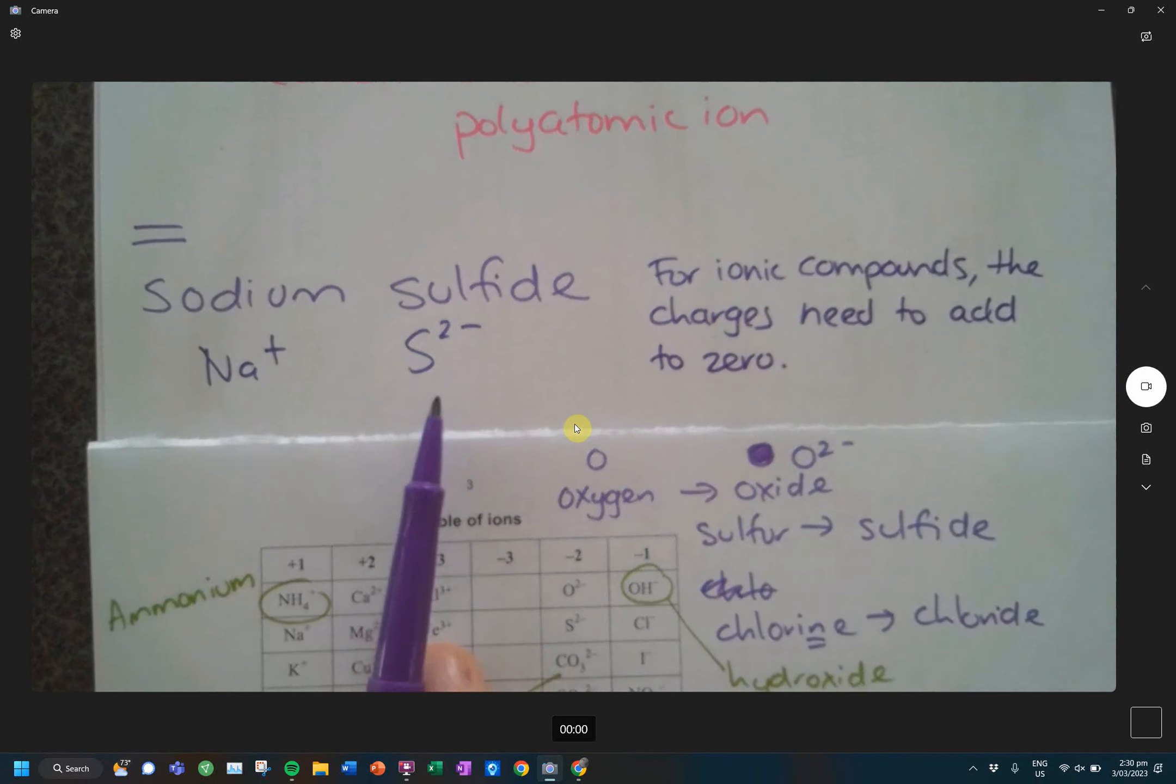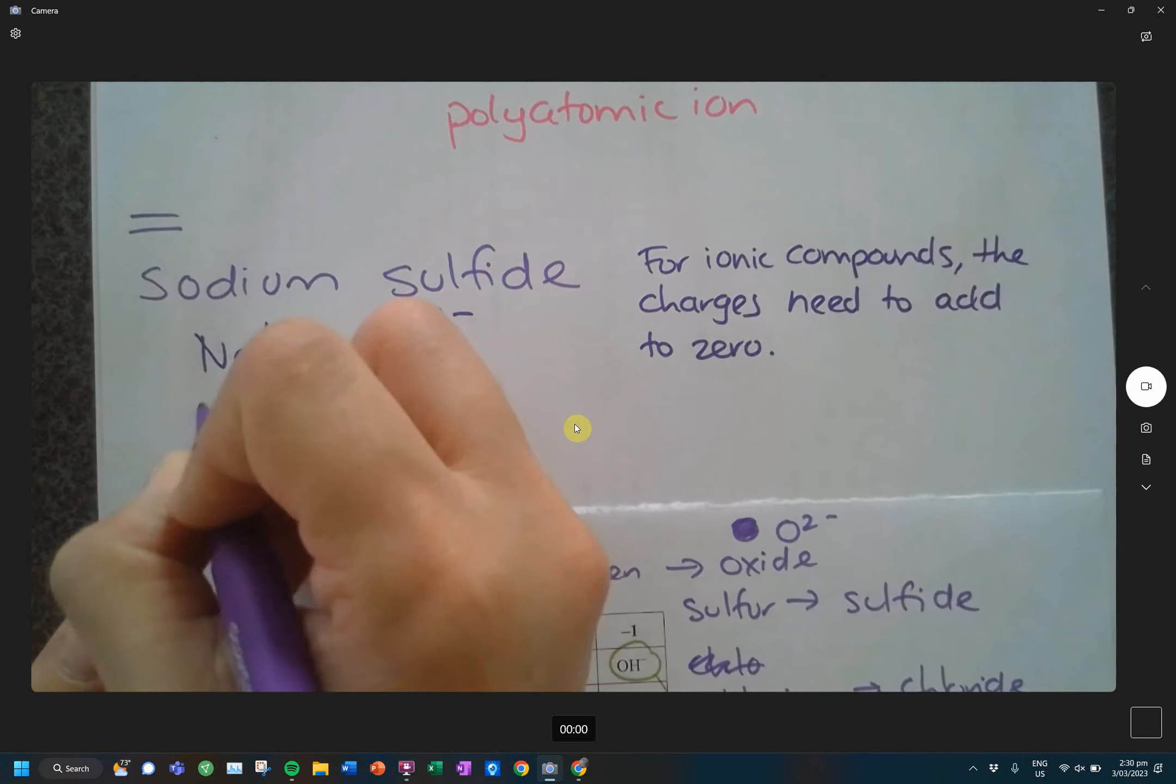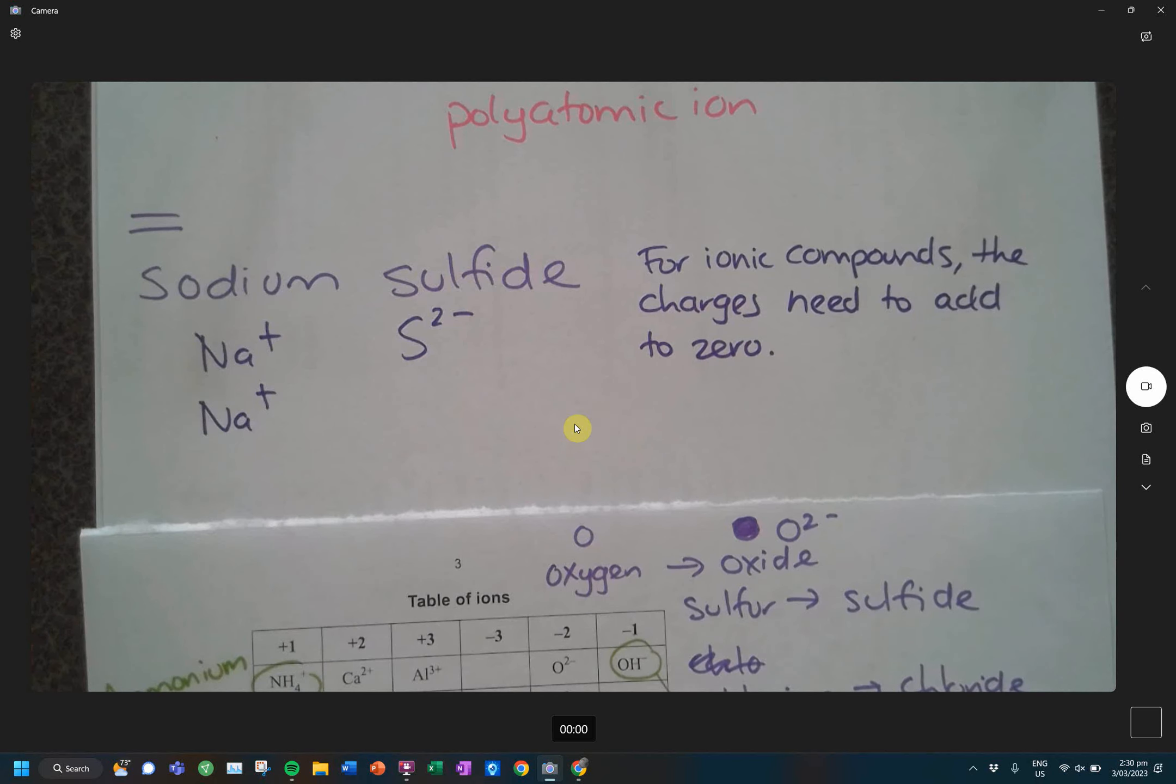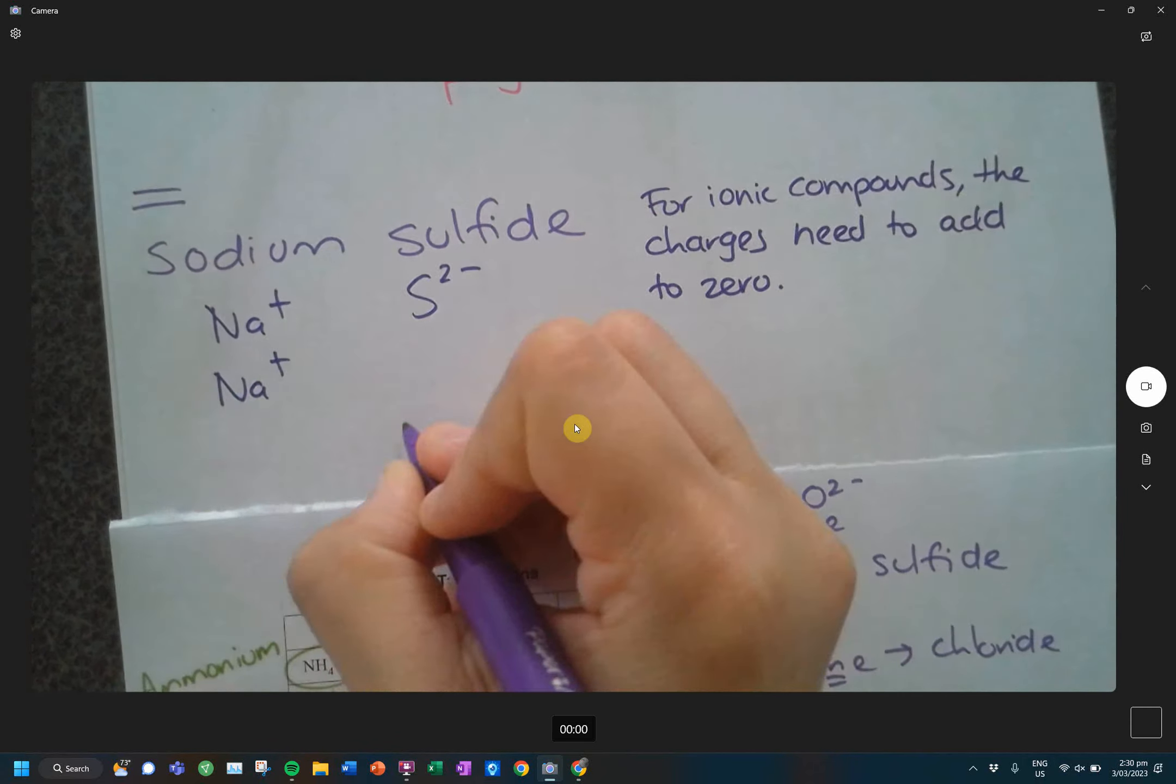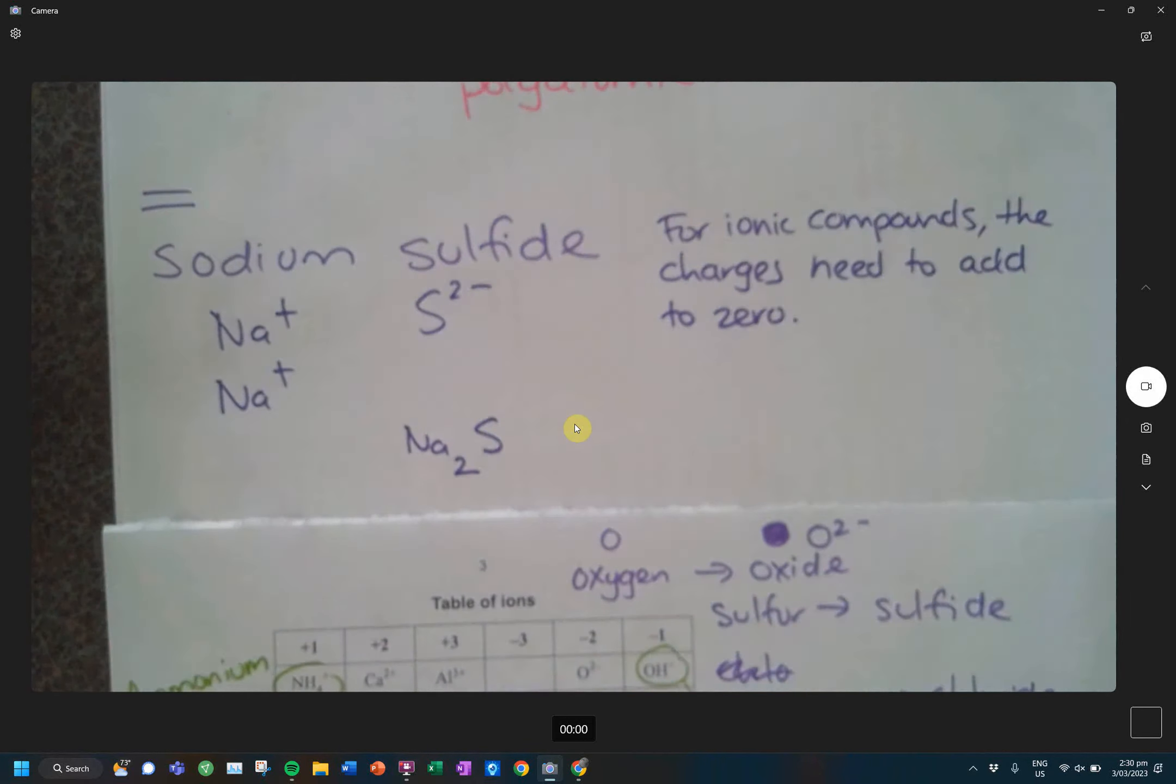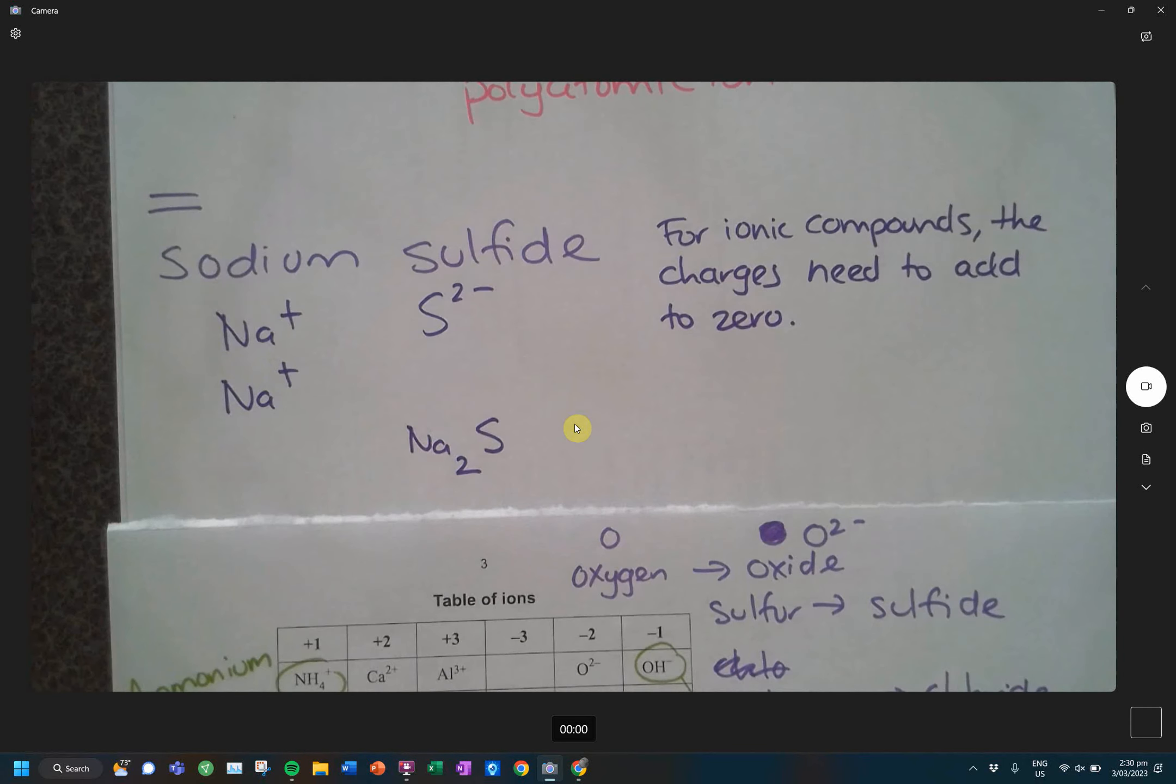So, if my sulfide is a negative two, and I'm adding a positive one, what's my net charge right now? If I have negative two plus positive one? Negative one. So, I need a second sodium ion, so that way now I have a positive two charge with a negative two charge, and it adds to zero. So, when I go to write the formula for this, it would be Na2, indicating two sodium ions, S. Are you okay with that?